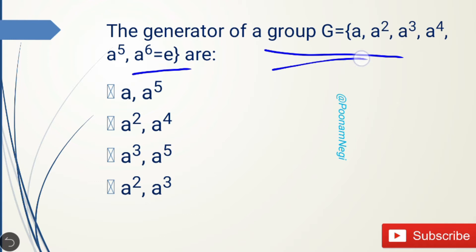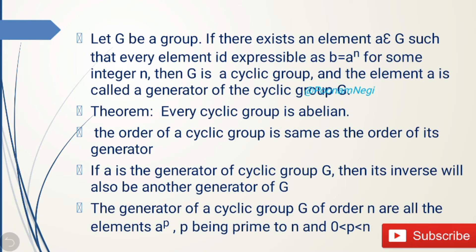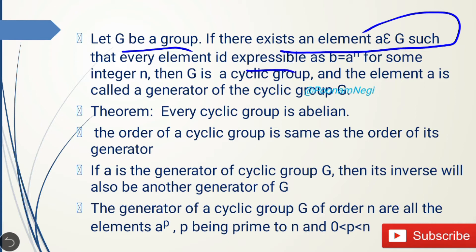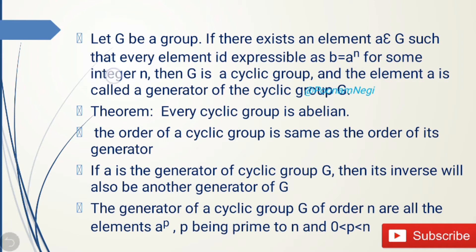You are given a group and you have to find out the generator of that group. Before solving this problem, let's understand what the generator of a group means. Let G be a group. If there exists an element a which belongs to G such that every element is expressible as b = aⁿ for some integer n, then the group G is a cyclic group.